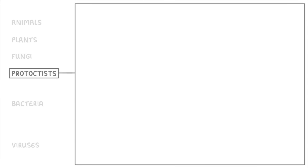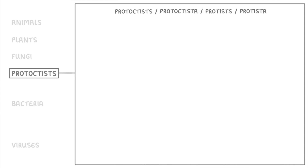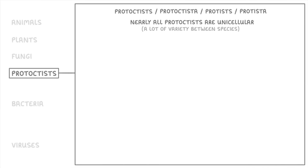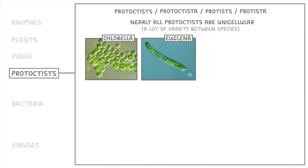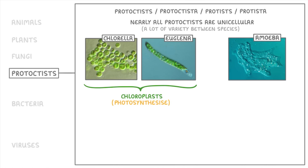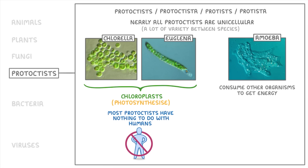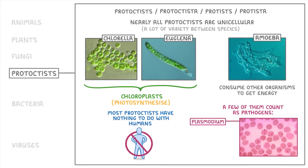Moving on to protoctists — the terms protoctists, protoctista, protists, and protista all mean basically the same thing, so don't worry about which word you use. Nearly all protoctists are unicellular, but there's still a huge amount of variety between different species. For example, some species like chlorella or euglena are a bit like plant cells in that they have chloroplasts which allow them to photosynthesize. Whereas other species, like amoeba, are more like animal cells and have to consume other organisms to get their energy. Most protoctists have nothing to do with humans, but a few count as pathogens — for example, the species plasmodium is the thing that causes malaria.